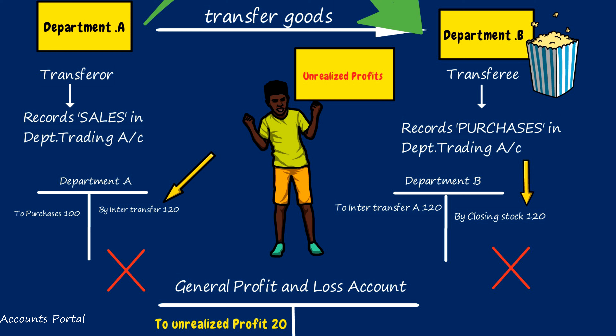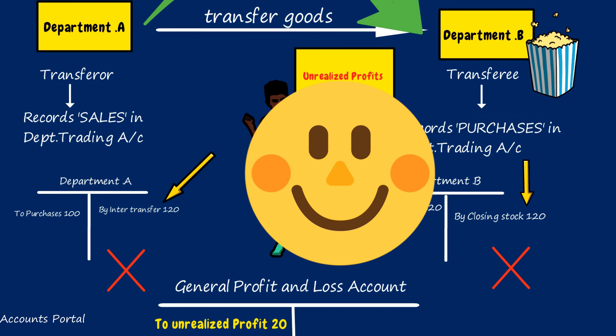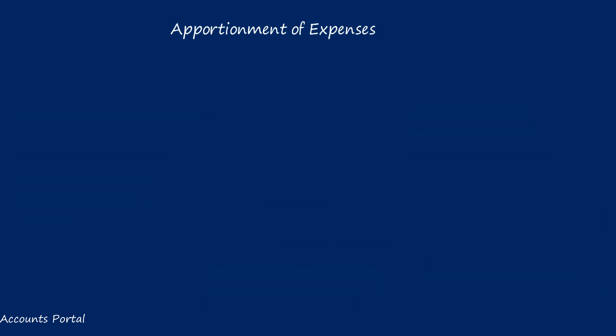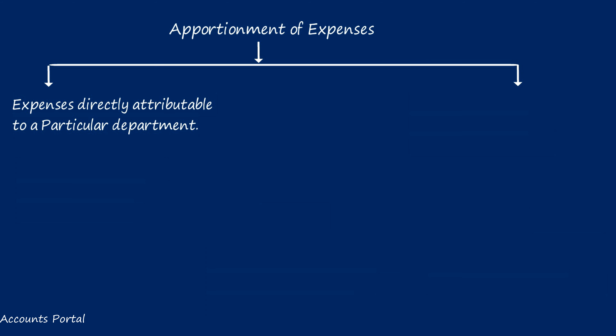The process is: first, prepare the departmental trading and profit and loss account to arrive at departmental net profit; then bring all net profits to the General Profit and Loss Account, where there are no separate columns for departments. In the General P&L, total all the profits and eliminate unrealized profits. Unrealized profits are computed by taking the transferee's closing stock and applying the margin used by the transferor to find the unrealized profit amount.